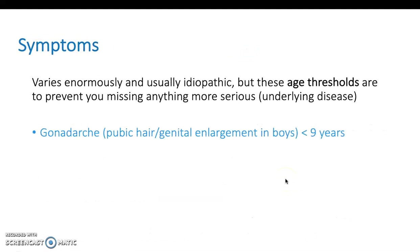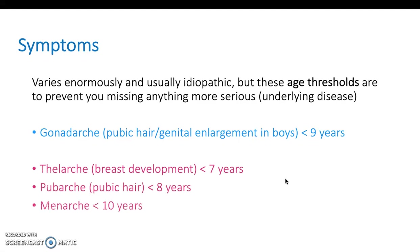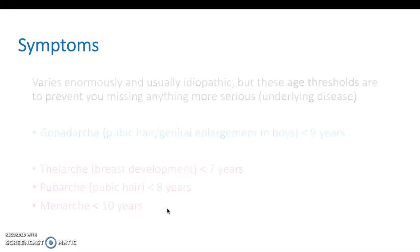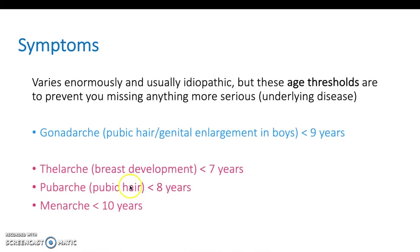Symptoms vary enormously and are usually idiopathic, but there are useful age thresholds to prevent missing anything more serious. For boys: gonadal development and genital enlargement, and growth of pubic hair under 9 years old. For girls there's a bit more to consider: breast development under 7 years, pubic hair development under 8 years, and menstruation beginning under 10 years old. The first sign for females is breast development — you're particularly concerned if that appears under 7 years old, whereas menstruation is only concerning under 10.